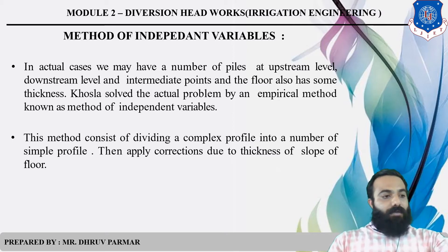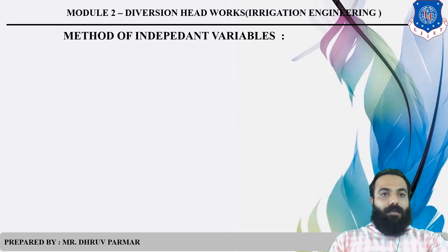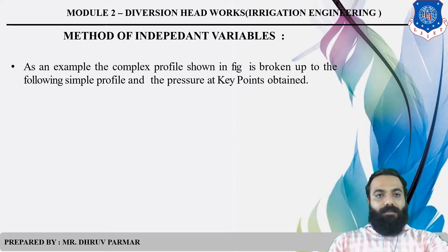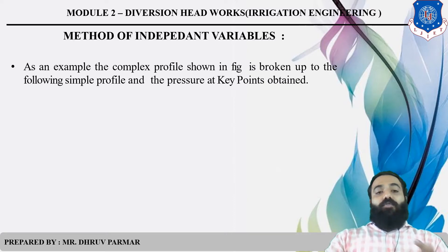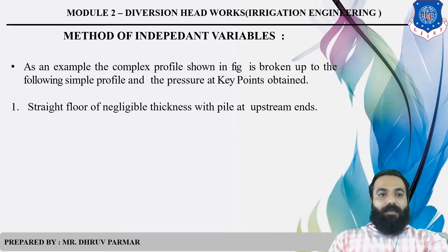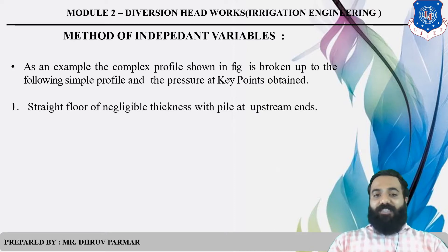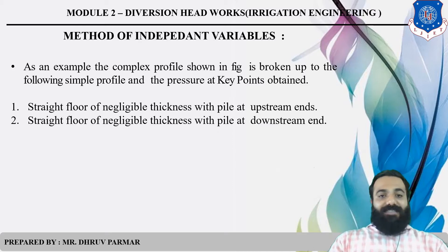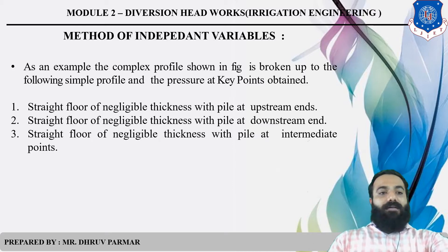We then apply various types of correction formulas for thickness, interference of pile, and flow. The complex profile shown in figure is broken up into simple profiles. The first is a straight floor with negligible thickness with a pile at the upstream end, the second at the downstream end, and the third at an intermediate point.